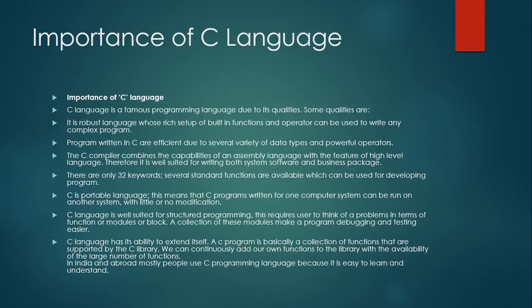C is a portable language. This means that a C program written for one computer system can be run on another system with little or no modification. Portability means you can carry something from one place to another — just like a laptop computer, which you can easily carry from one place to another, unlike a desktop computer. Similarly in C, you can code a program on one computer, carry it on a storage device, and use it on another system.